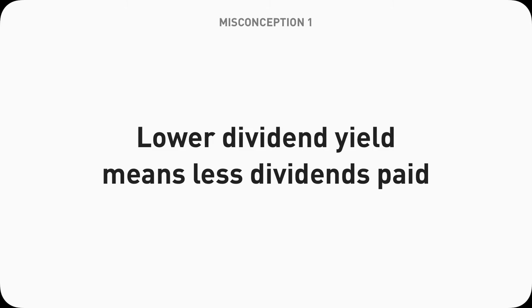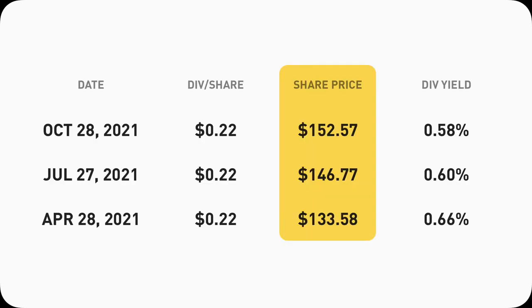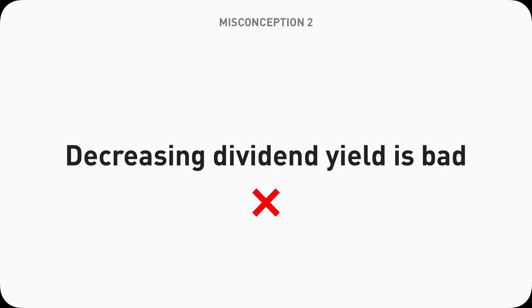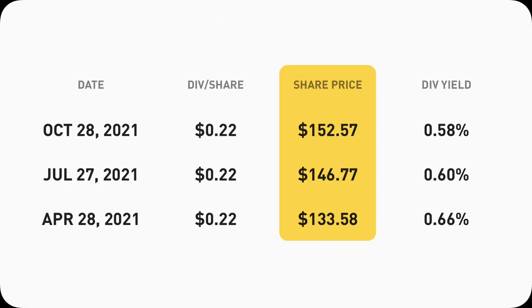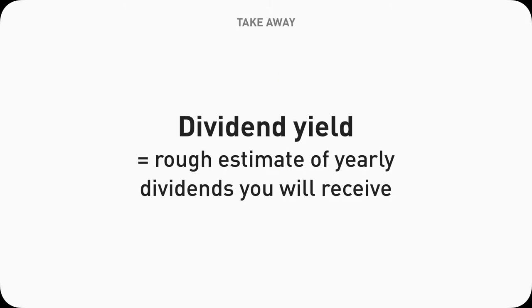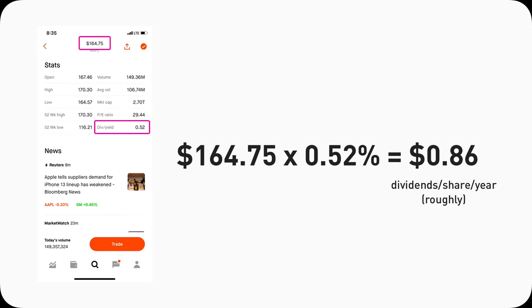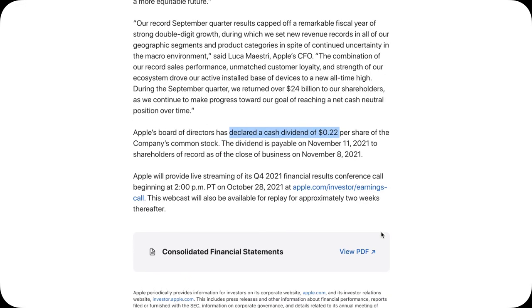I want to clarify a few misconceptions. First: does lower dividend yield mean they will pay less dividend? No. In all three quarters they paid the exact same amount. The dividend yield dropped because the stock price went up. Second misconception: decreasing dividend yield is a bad thing. Maybe, but it's not always true — the yield decreased because the stock went up in price, so your total account value is actually growing. The takeaway is that dividend yield roughly gives a sense of how much a company pays. You can multiply that yield by the current stock price to estimate annual dividend cash per share. For precision, go to the company's investor relations page and check their earnings report.